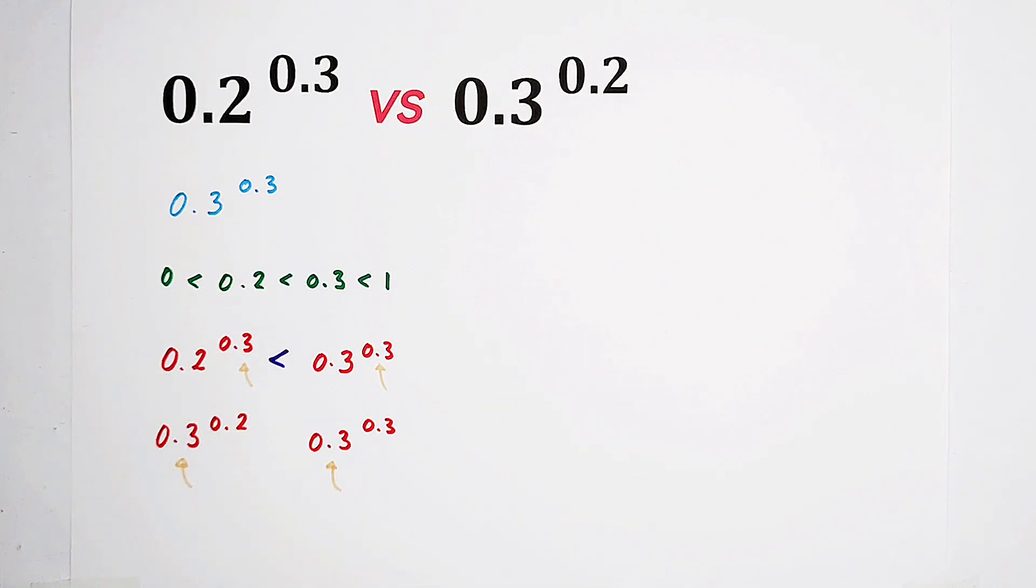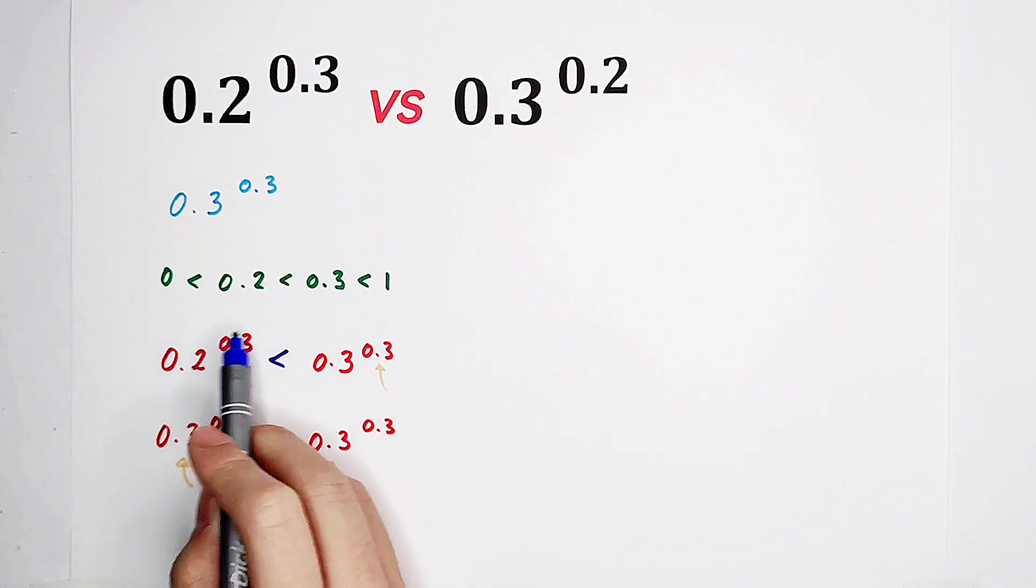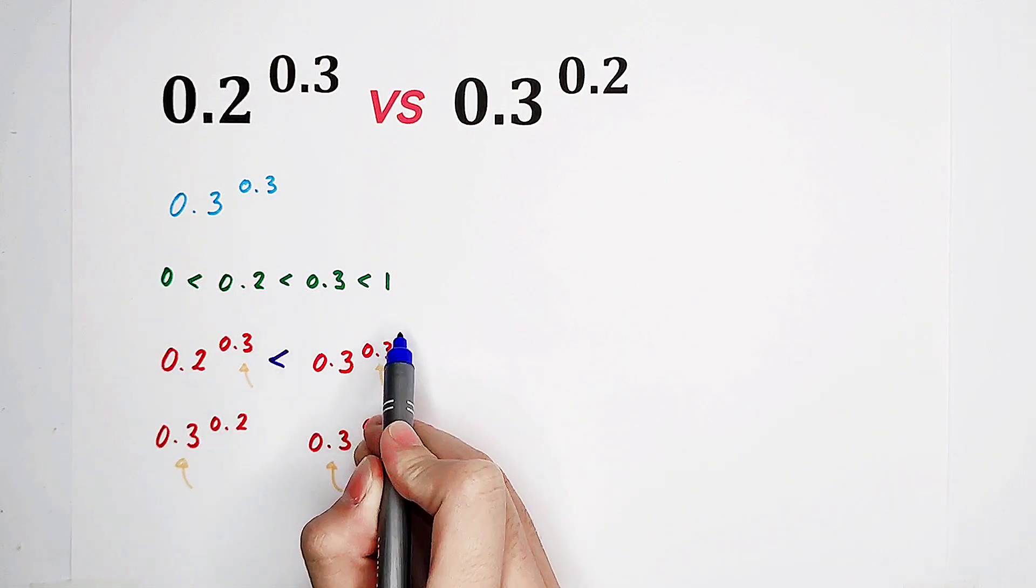However, the exponents are between 0 and 1. If the exponents are between 0 and 1, the one whose exponent is smaller has the bigger value. Because the exponents are between 0 and 1.